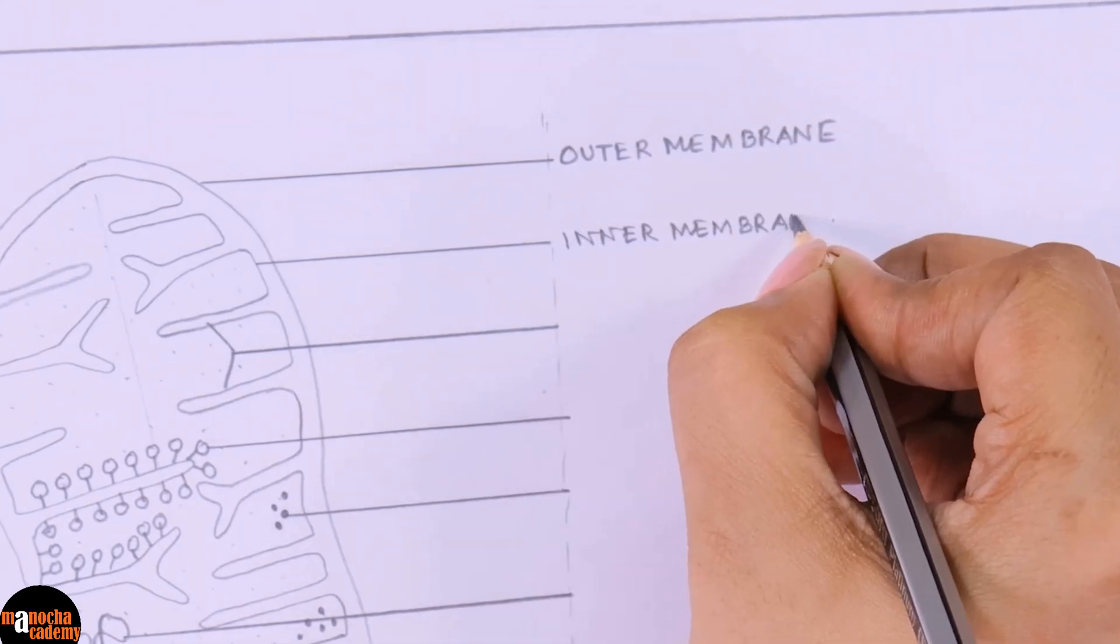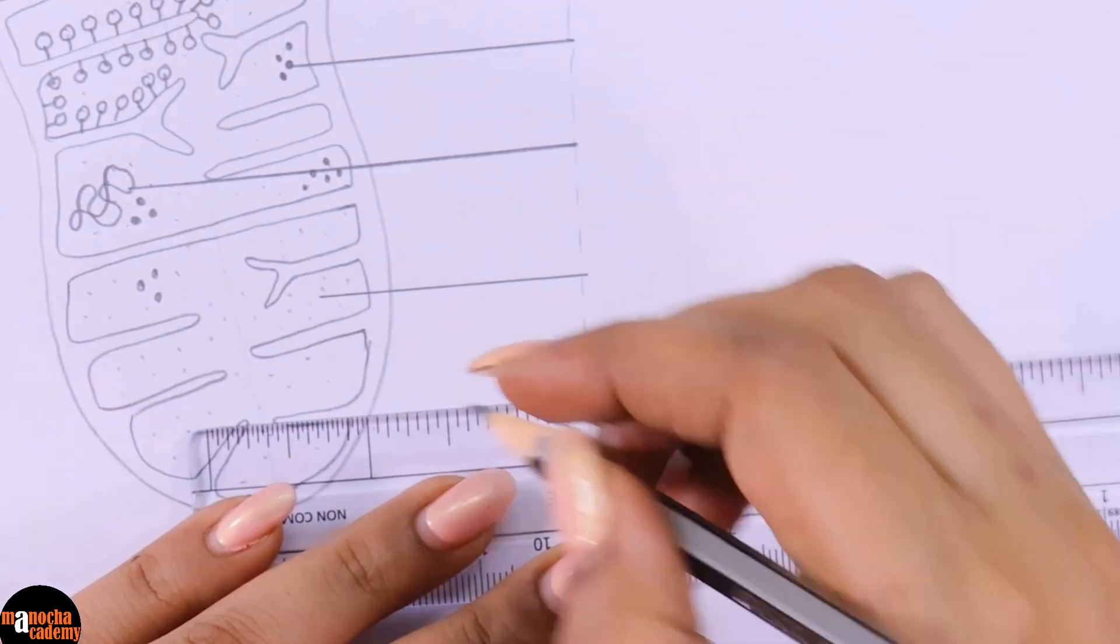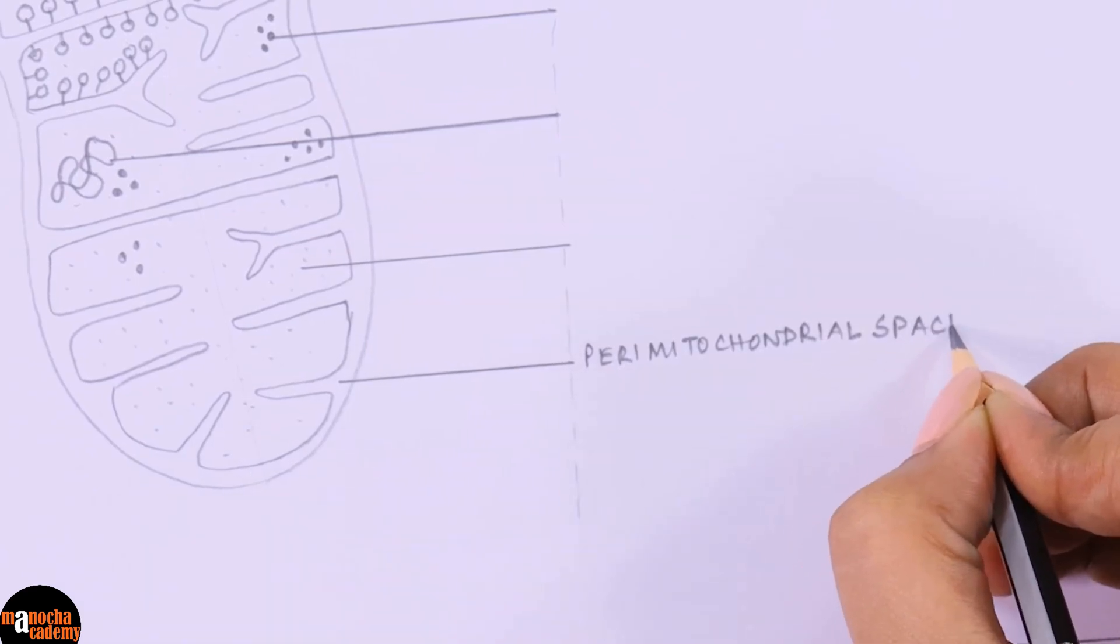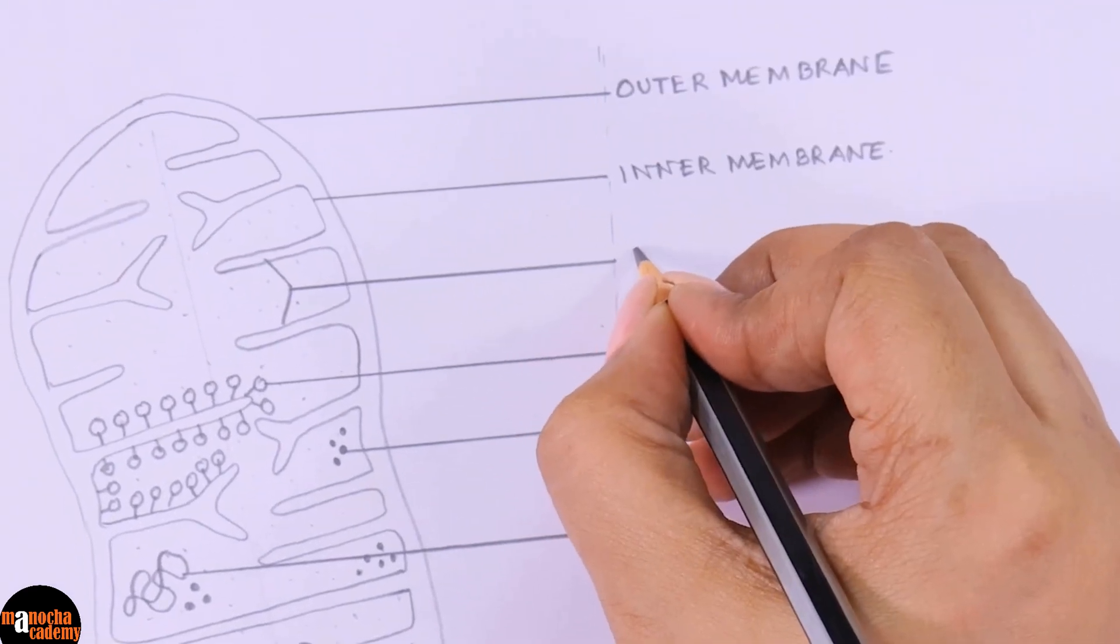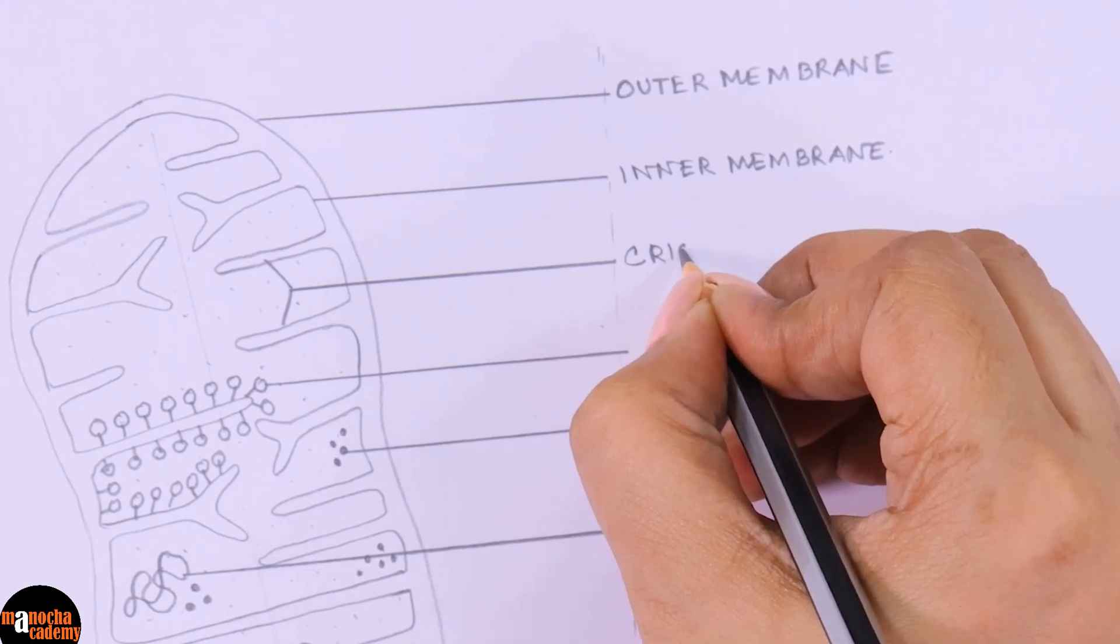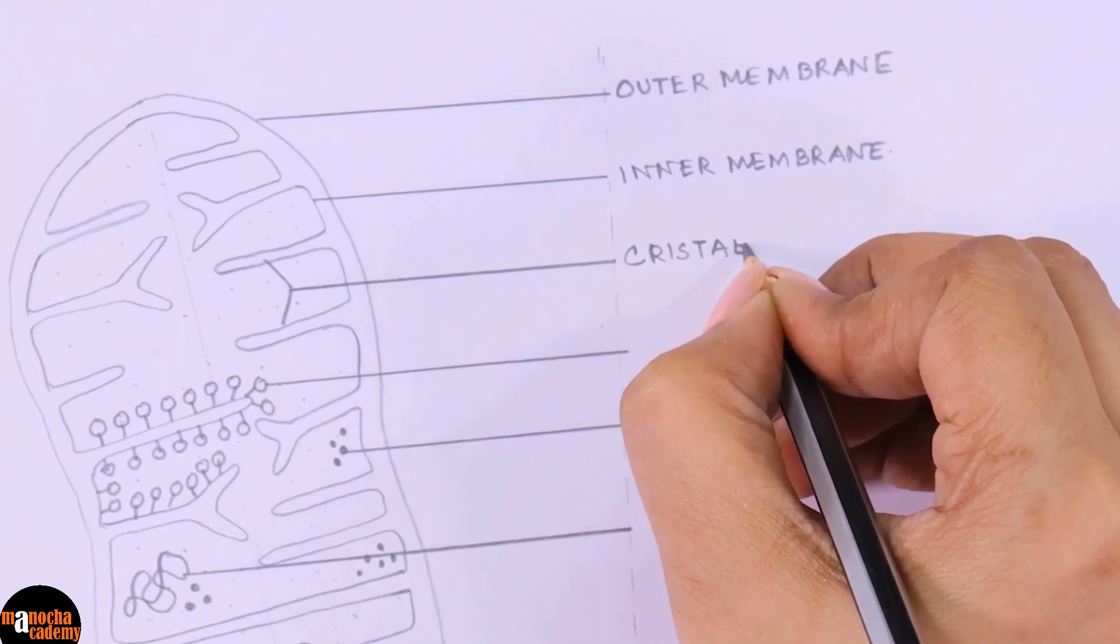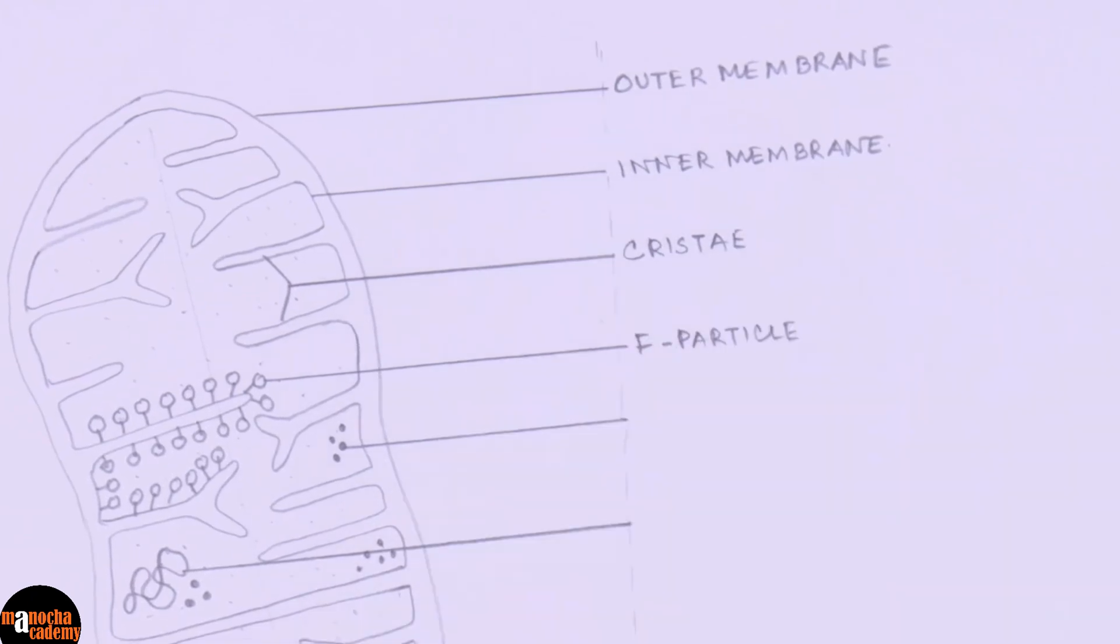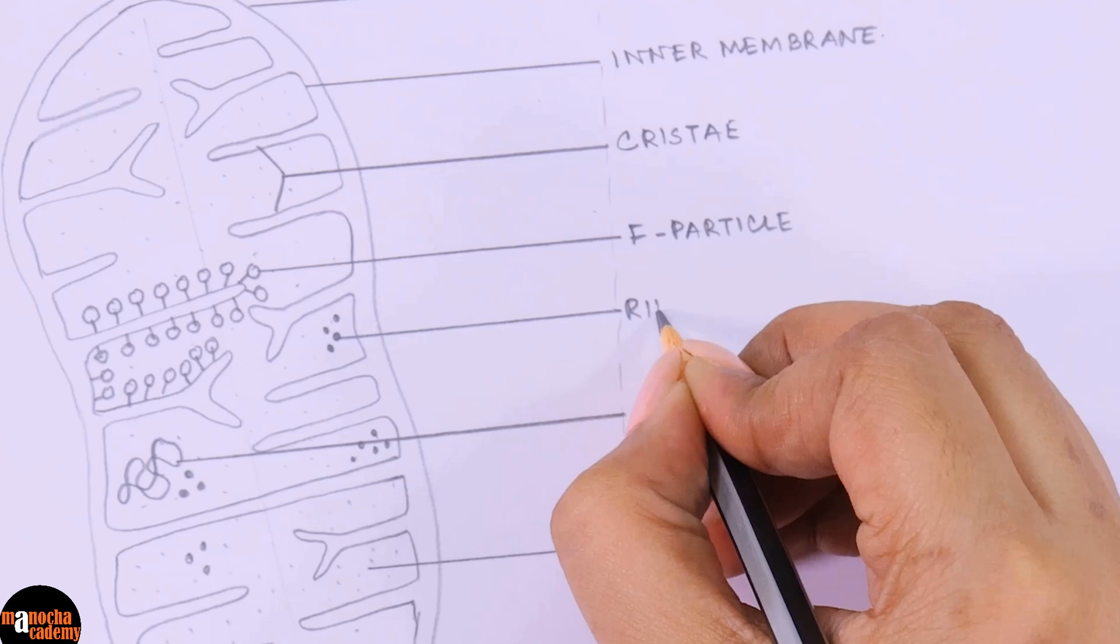This is the inner membrane. I will also label the space in between the two membranes, which is known as the peri-mitochondrial space. Then these are the finger-like projections, which are known as cristae. Singular is crista, plural is cristae. This we will label as F particles.